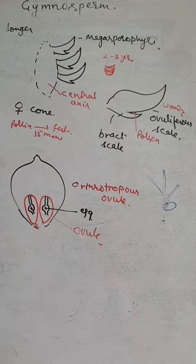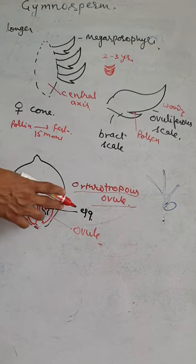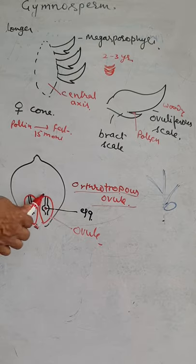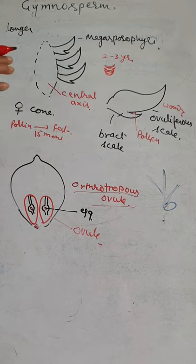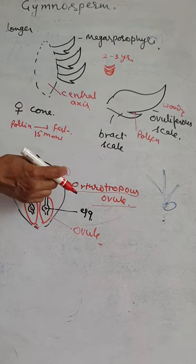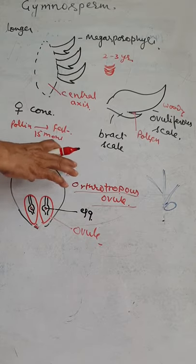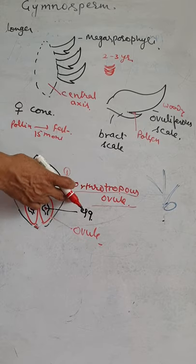There are 2 ovules on the megasporophyll. Inside each ovule, the egg is present. The ovule is of the orthotropous type — orthotropous ovule is a characteristic feature of gymnosperms. It is also unitegmic, meaning it has a single covering. Learn this important point: Pinaceae has orthotropous, unitegmic ovules.